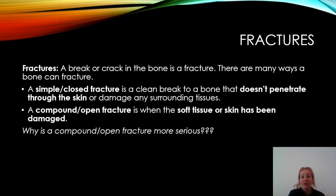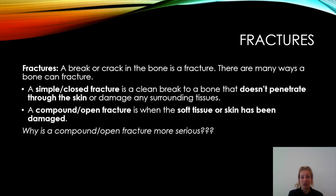Starting with fractures: any time there is a break or a crack in the bone, it is a fracture. There are many different ways that a bone can fracture, and we're going to learn about those different names in a moment. Fractures are split into two different groups. A simple or closed fracture is where the bone stays within the arm, for example, and does not penetrate through the skin or tissues at all. A compound or open fracture is where the bone penetrates through the skin and you can see it sticking out.